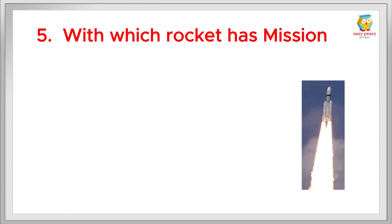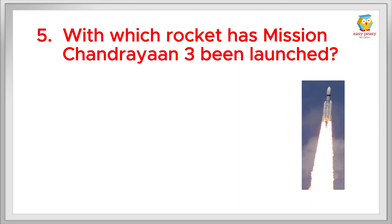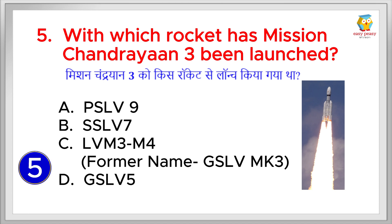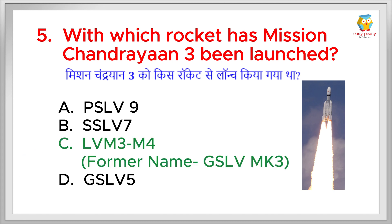With which rocket was Mission Chandrayaan 3 launched? Mission Chandrayaan 3 ko kis rocket se launch kiya gya tha? The right answer is LVM3 M4. Full form of LVM3 is Launch Vehicle Mk3 and its older name is GSLV Mk3.